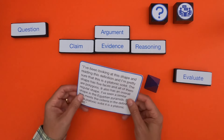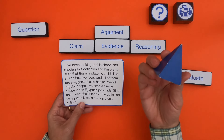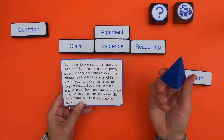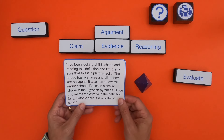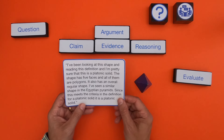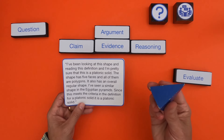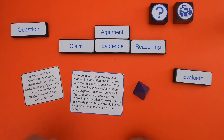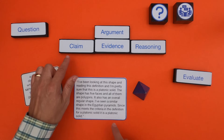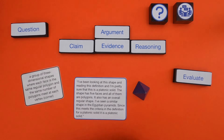Okay, for the second one I have another argument. It reads: I've been looking at this shape and reading the definition and I'm pretty sure that this is a platonic solid. The shape has five faces, all of them are polygons. It also has an overall regular shape. I've seen similar shapes in Egyptian pyramids. Since this meets the criteria for the definition of a platonic solid, it is a platonic solid. I'd encourage you to pause the video, evaluate the argument — come up with their question, claim, evidence, and reasoning — then unpause and take a look.